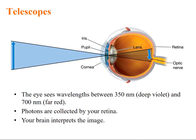Coming to the topic telescope. The most simplest telescope that you can see is your eye itself. The eye sees the wavelength between 350 nanometer, that is deep violet, to 700 nanometer, that is far red. So, in an eye, we have an iris, a pupil, through which light enters and it falls on retina. And retina collects this to the brain through optic nerve. So, photons are collected by your retina. The image which is collected in retina is inverted. So, brain interprets the image and gives the real picture for you.